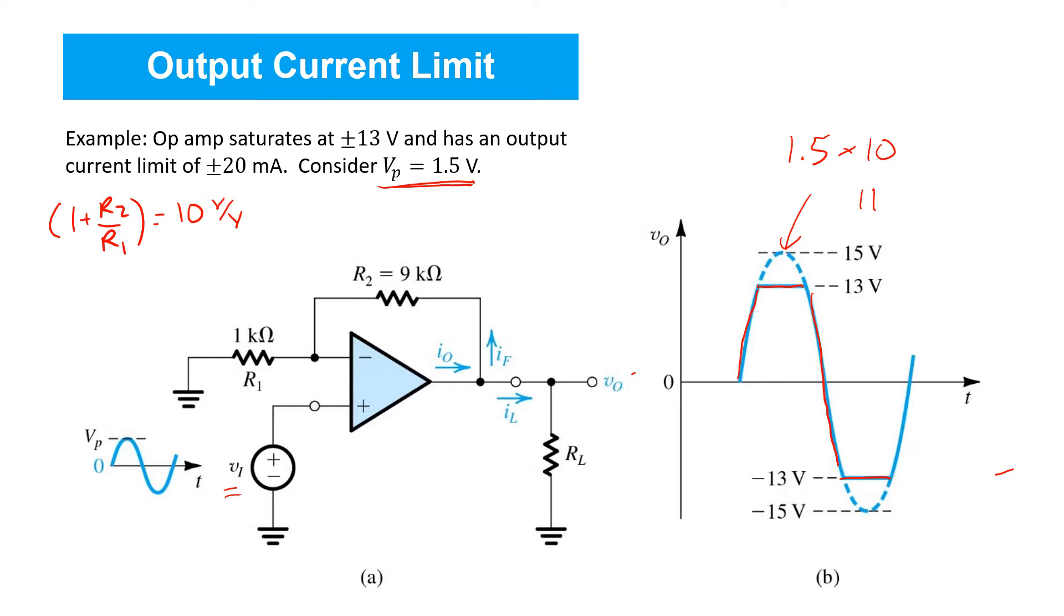So that's the story with respect to output voltage saturation, but we also need to consider whether the output current limits of the op-amp are being respected. To do so, let's consider a nodal equation here. We see that the output current of the op-amp has two components. There's the current IF that's flowing through resistor R2 and the current IL that's flowing through the load resistance RL. IF is equal to VO minus the voltage on the left side of resistor R2, which thanks to a virtual short-circuit assumption, is equal to VI, divided by the resistance R2. And then the load current is simply VO over RL.